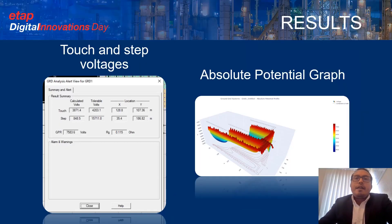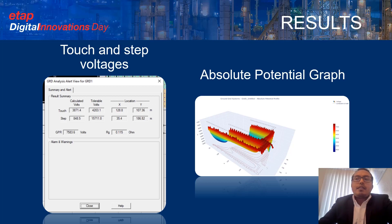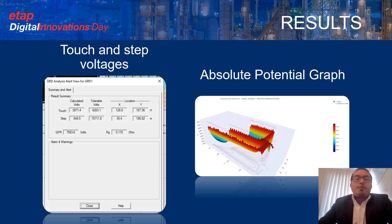Now the results. In the results window, we can see the tolerable and calculated touch and step voltages, as well as the resistance to ground in ohms. We can also see the ground potential rise in volts — this value refers to when currents of large magnitude enter the Earth from a grounding system, and not only will the grounding system rise in electrical potential, but so will the surrounding soil as well. When we ran the study, the window did not show any red warnings, meaning the proposed design was correct and ready to be applied.